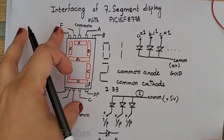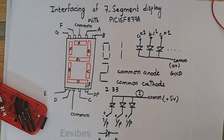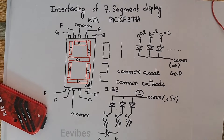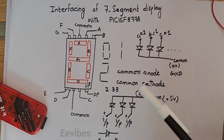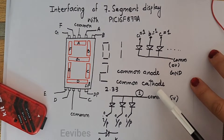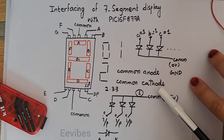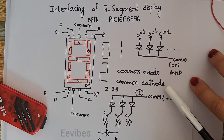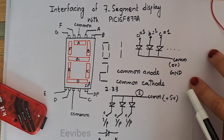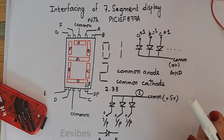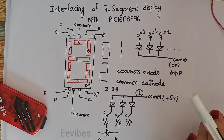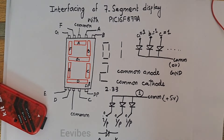There are two types of seven segment displays available in the market: the first is the common anode type and the second is the common cathode type. It depends on your choice which one you want to use in your project or application.